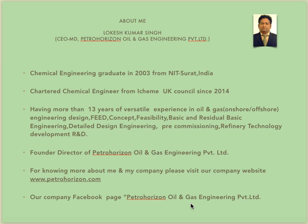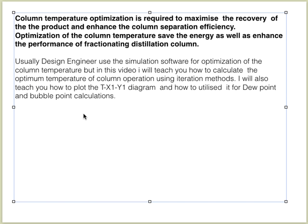Column temperature optimization is required to maximize the recovery of the product and enhance the column separation efficiency. Optimization of the column temperature saves energy and enhances the performance of the fractionating distillation column. When I say 'column,' I mean a fractionating distillation column. Usually design engineers use simulation software for optimization of column temperature, but in this video I will teach you how to calculate the optimization temperature using the iteration method manually.